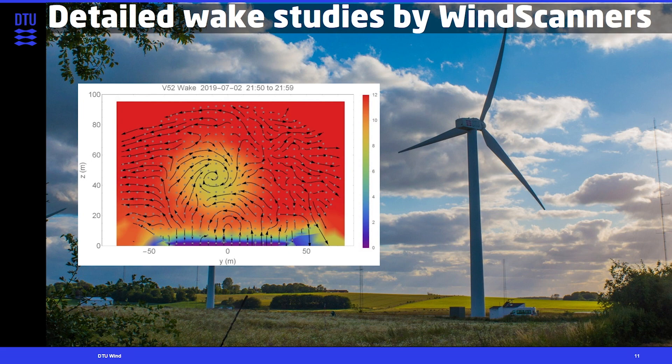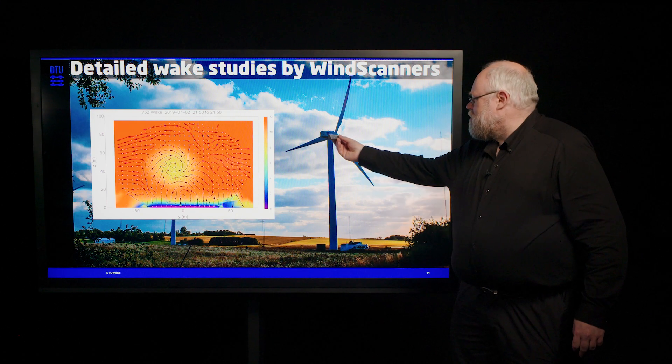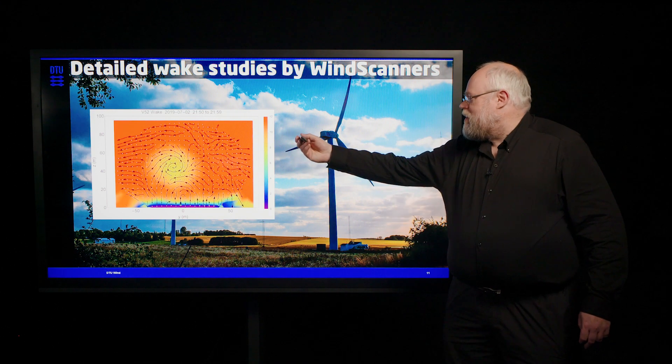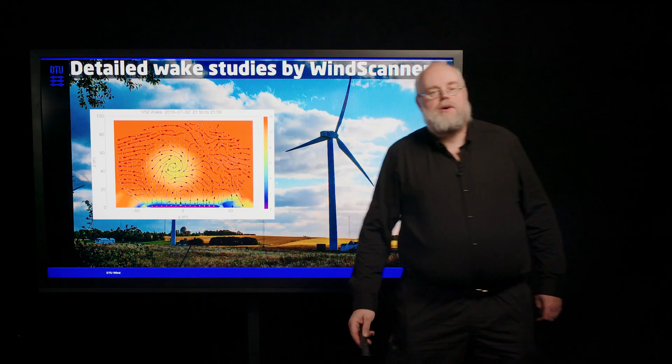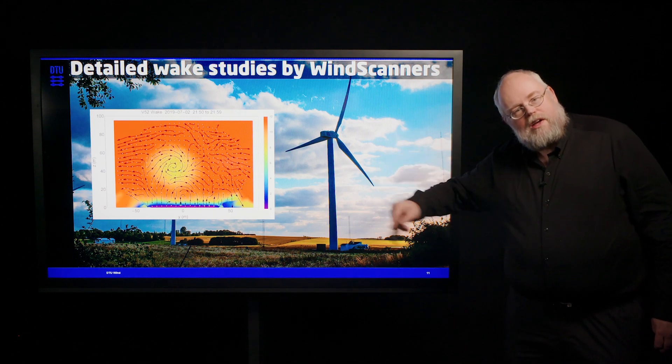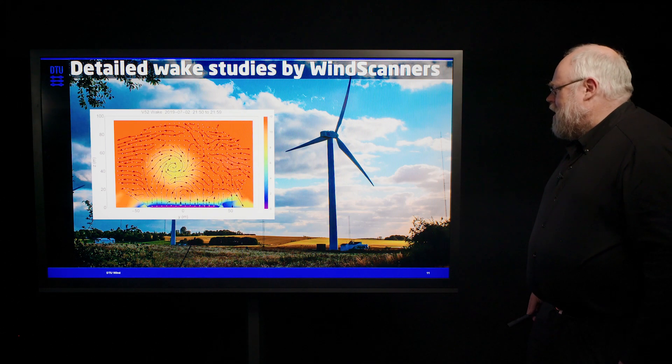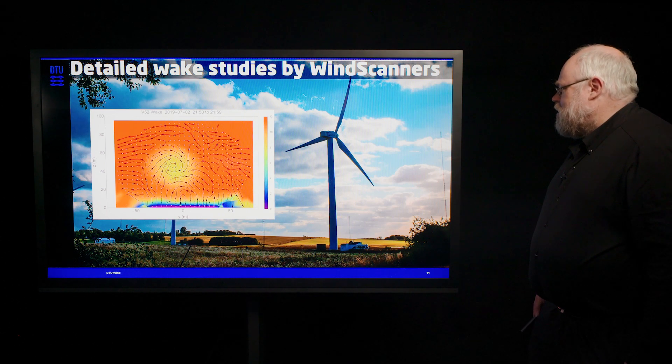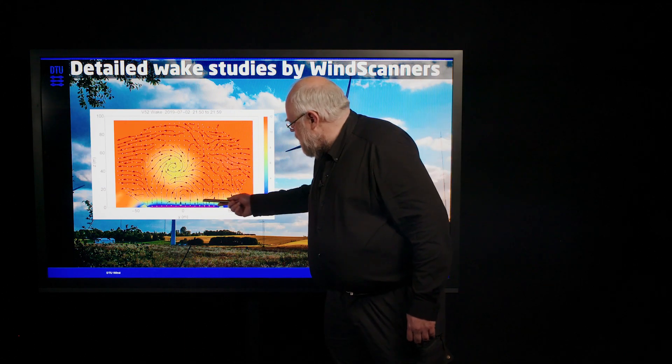And what we see here, the colors here represent the wind along the wind component along the mean wind direction. So coming through the rotor out here. And then we have indicated the perpendicular wind components with these arrows here. So you can see how the wake is swirling around behind the turbine.